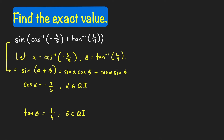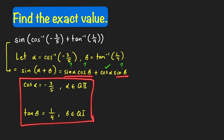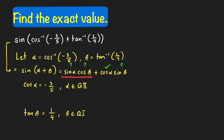Going back to what we're looking for, we need to find the values of sine(alpha), cosine(beta), and sine(beta). We already know cosine(alpha). In this video I'll show how to find these unknown quantities using right triangles and the reference angles of alpha and beta.